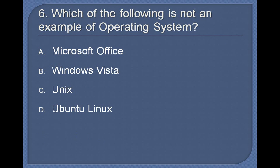6. Which of the following is not an example of operating system? Microsoft Office, Windows Vista, Unix, Ubuntu Linux. Answer: Microsoft Office.